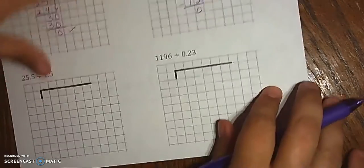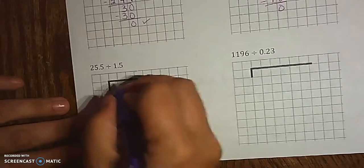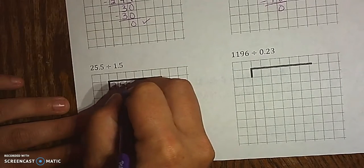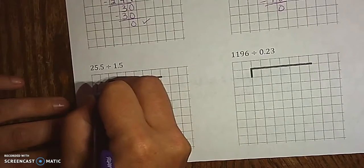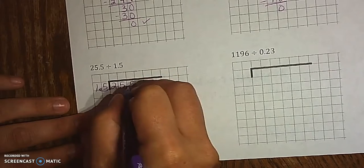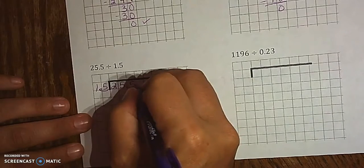Coming down. 25.5 goes in the middle, 1.5 on the outside. Move the decimal over. So this is my new spot.